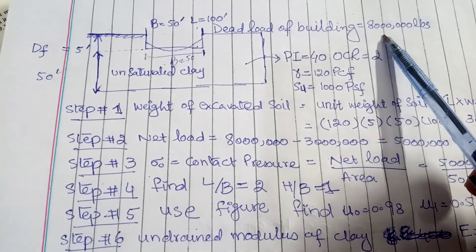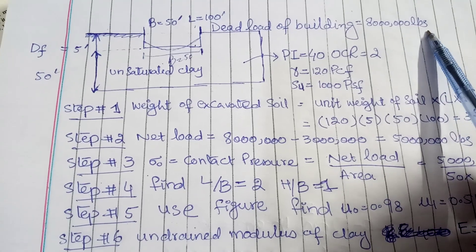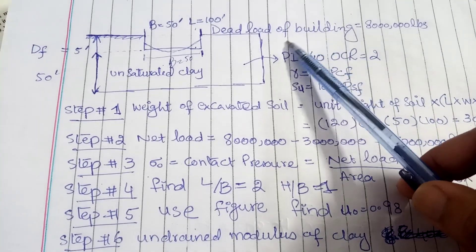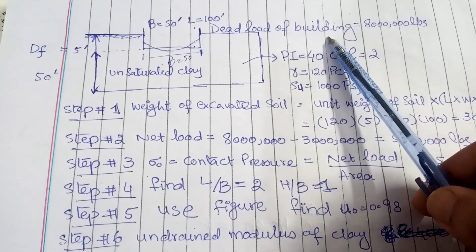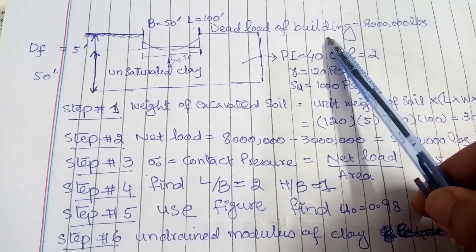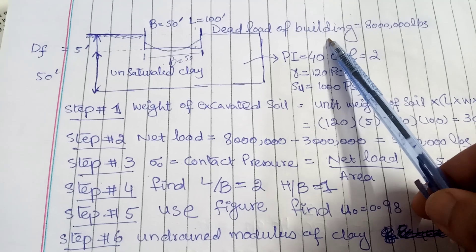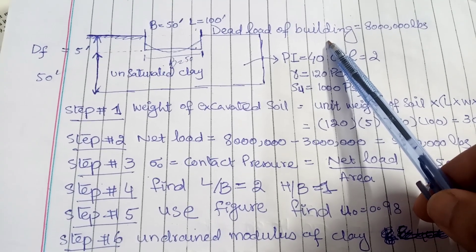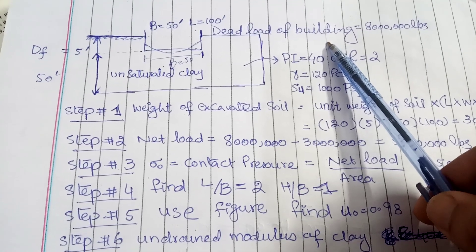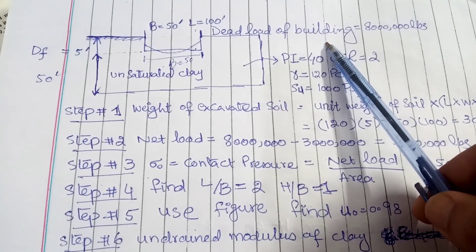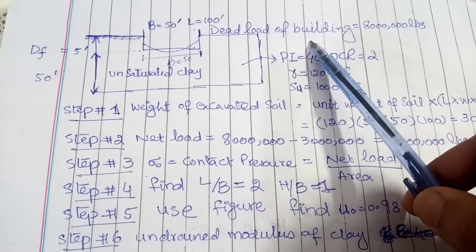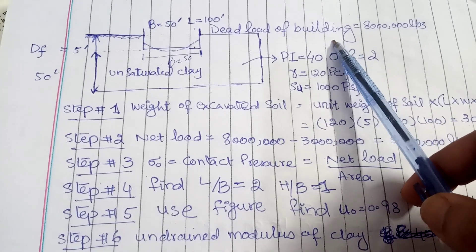So the load of building is equal to 100,000 pounds. How to calculate this dead load of a building? This I have also explained in my previous video. I will also put the link of this video in the description. You can check that and through that video you can learn the procedure of finding dead load of building.